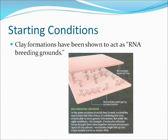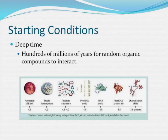Certain clay formations have proven especially interesting with respect to RNA formation and polymerization. Experiments have shown that the presence of fatty acids, clay, and RNA molecules can produce an RNA breeding ground where RNA synthesizes spontaneously. Another very important constituent is deep time. From the time the Earth's crust solidified to the great oxidation event, there were hundreds of millions of years for these chemicals to find each other and form into self-propagating lifeforms. This amount of deep time can fairly easily account for the unlikelihood of RNA synthesizing in early Earth conditions.